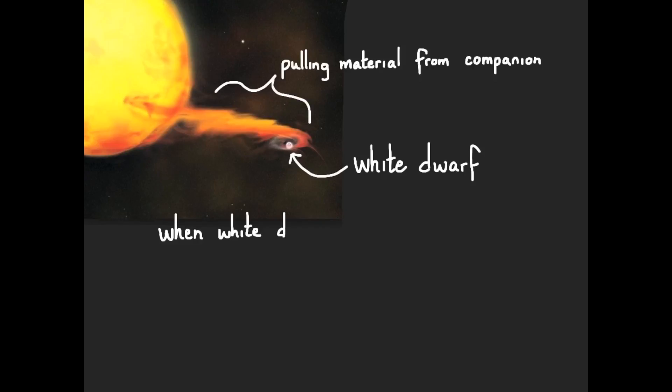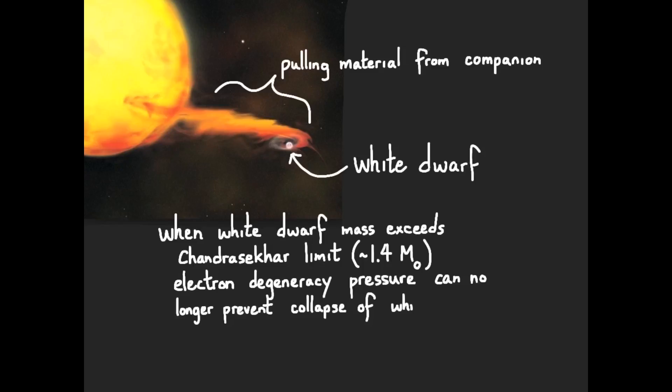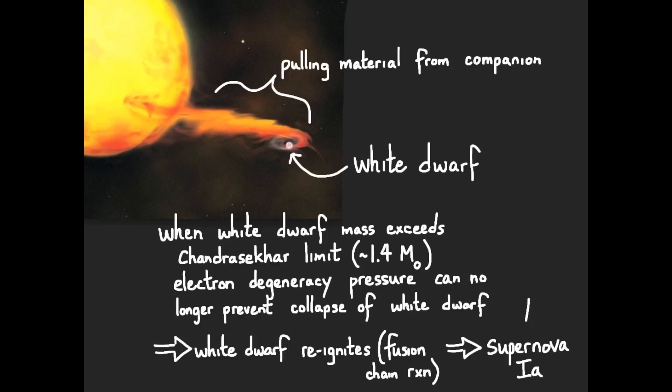When the white dwarf has accumulated enough mass, when it exceeds the Chandrasekhar limit, about 1.4 solar masses, electron degeneracy pressure can no longer prevent collapse of the white dwarf. Gravity takes over, and the white dwarf collapses. The collapse increases the temperature of the core so much that the white dwarf reignites fusion. And this time the fusion process happens all at once, a chain reaction. And we get a supernova, type 1a.